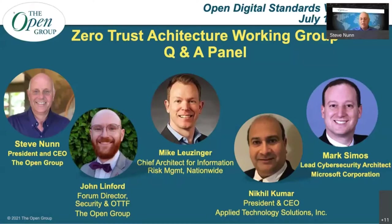We've got a few questions coming in about the principles and the commandments reference. One from Craig Heath — who's been around our security forum for a long time. He says the scope of zero trust architecture seems similar to the scope of the Jericho Forum, especially considering the access-to-data section of the Jericho Forum commandments. Could the panel please compare and contrast these two initiatives?